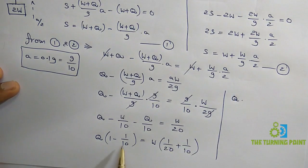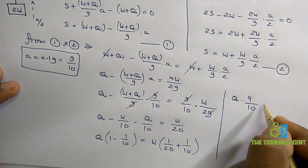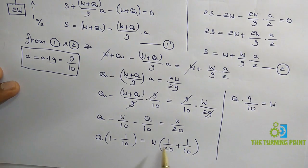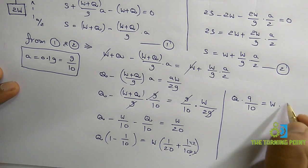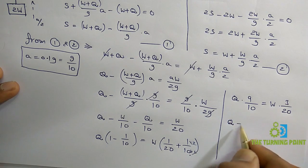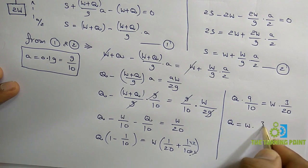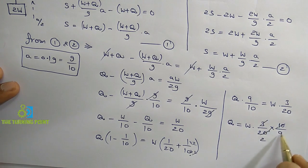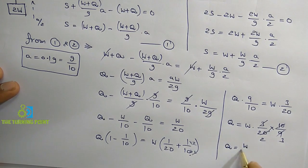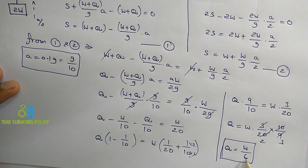So Q times 9/10 equals 3W/20. Therefore Q equals W times (3/20) times (10/9). Simplifying, 10 and 20 give a factor of 2, and 3 and 9 give a factor of 3. So Q equals W/6. The additional weight required is W/6.